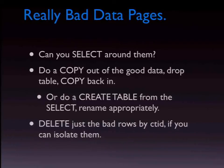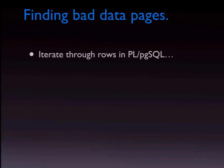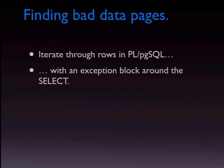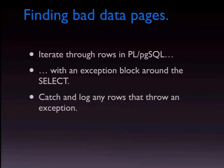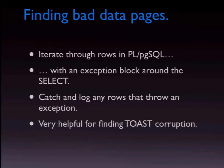You can sometimes just delete the bad rows by CTID if you can isolate them — sometimes a DELETE will work where a SELECT won't, usually because it's trying to decompress the page data and it isn't working. A great technique is to iterate through rows in PL/pgSQL with an exception block around the SELECT, catching errors and continuing rather than stopping when it hits a bad row. This is very handy for finding TOAST corruption — very frequently the primary data structure is fine but the TOAST table has a hit. You do a SELECT of the whole table and everything looks fine, but your application is getting errors, because SELECT * of the primary structure doesn't decompress TOAST data.